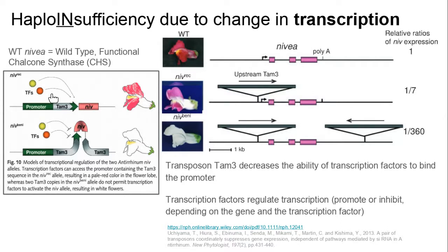So let's say that this red blob here had a mutation — so there's a mutation in the transcription factor. Can the mutation of the transcription factor impact the expression or the phenotype you're going to see that is conditioned by this other gene?